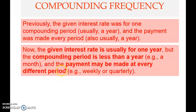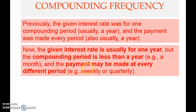So there are two things: compounding frequency — how many times you compound within a year — and then the payment frequency. These can be different. Previously we assumed all of this would be the same, meaning only yearly, but here we remove that constraint. The interest rate is usually given for one year; the compounding period is usually less than a year; and the payment can be weekly, quarterly, or any other period.